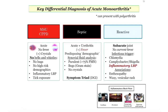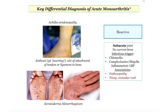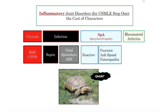Reactive arthritis: subacute, no current fever — they had a fever maybe two weeks ago. The infectious trigger is urethritis or diarrhea, plus inflammatory back pain. Associations include enthesopathy — inflammation at the site of tendon, ligament, and bone insertion — so Achilles tendonitis or plantar fasciitis may be offered. There is also a dermatologic manifestation: keratoderma blennorrhagicum, a waxy vesicular rash. When they describe a palmar rash or a rash on the soles of the feet, don't diagnose syphilis — it's something else. Those are the joints, each with subtle nuances.